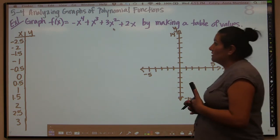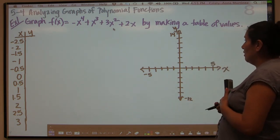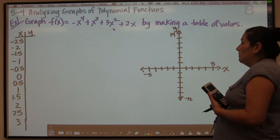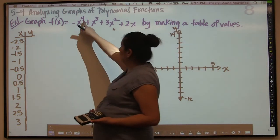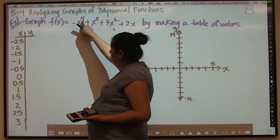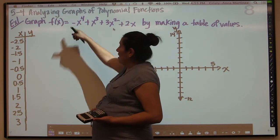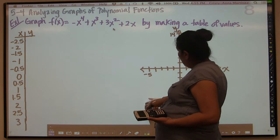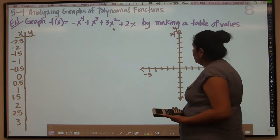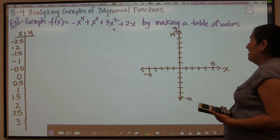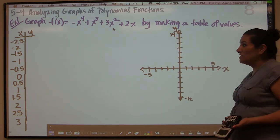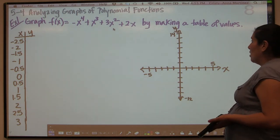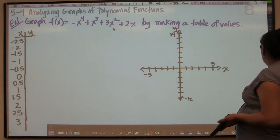Basically, they're asking us to graph this function, and we already saw in the previous section that when it's an even exponent and negative, our end behavior is going to be going down on both ends. So they want us to graph this, and there's really no easy way around it — you just have to make a table of values, so I'm going to go ahead and show you how to do that.